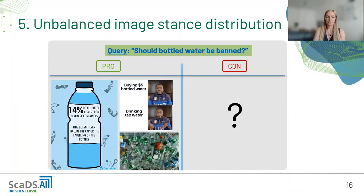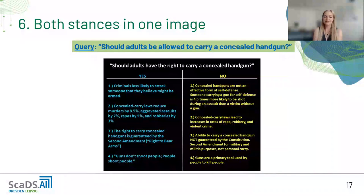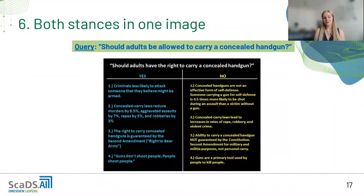We also found that some images contain both stances at the same time — for example, an image listing arguments for both the pro and con side. Such an image can be used in argumentation, but it is very hard to assign a single stance. It would be useful to have an extra category for images that cannot be assigned a stance.